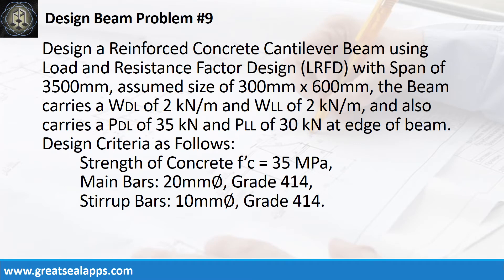Design a reinforced concrete cantilever beam using load and resistance factor design with a span of 3,500 mm. Assume a size of 300 mm by 600 mm. The beam carries a uniform dead load of 2 kN per meter, a uniform live load of 2 kN per meter, a concentrated dead load of 35 kN, and a concentrated live load of 30 kN at the edge of the beam. Design criteria as follows.